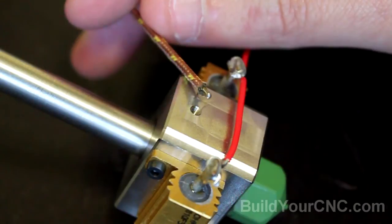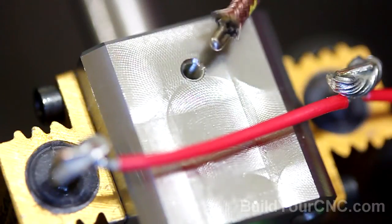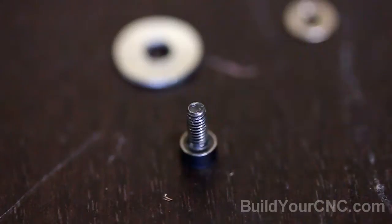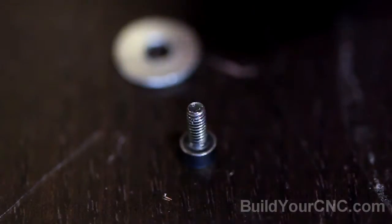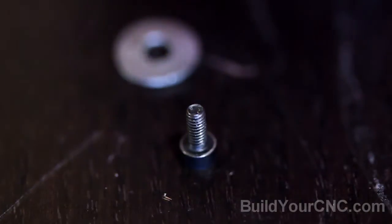You'll need an M2 screw and washer for this. We will need to fasten the metal end of the thermocouple to this section of the hot end. So first add the smaller washer onto the M2 screw.